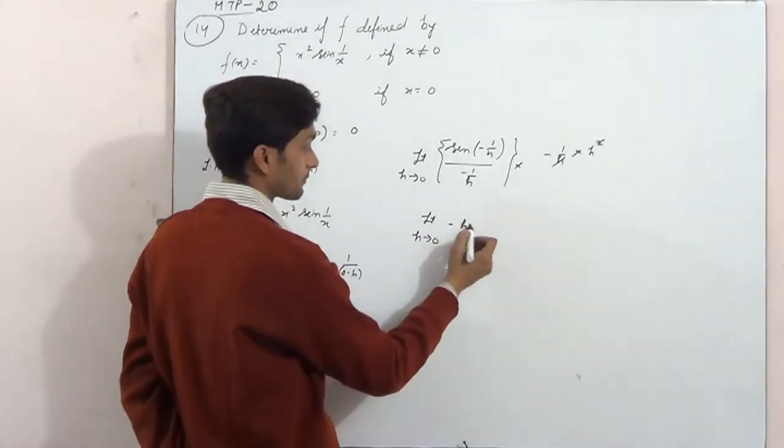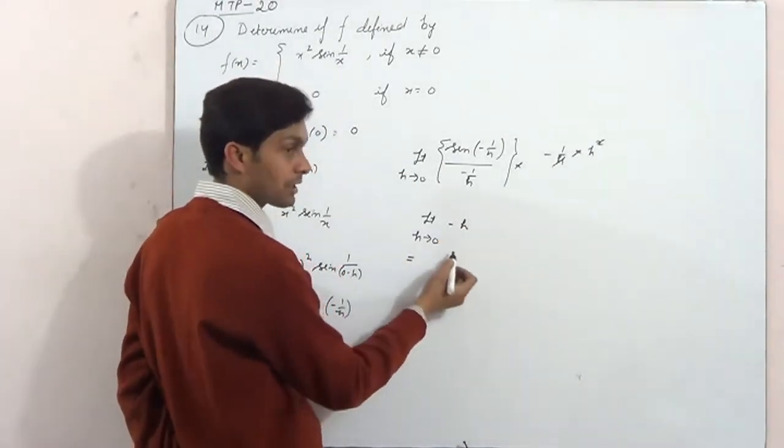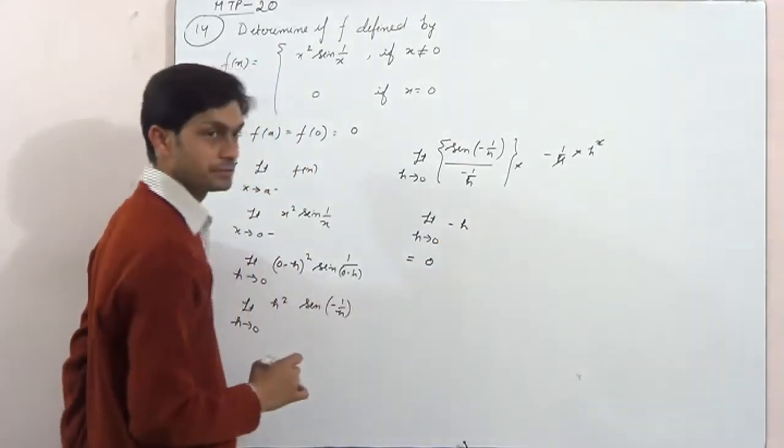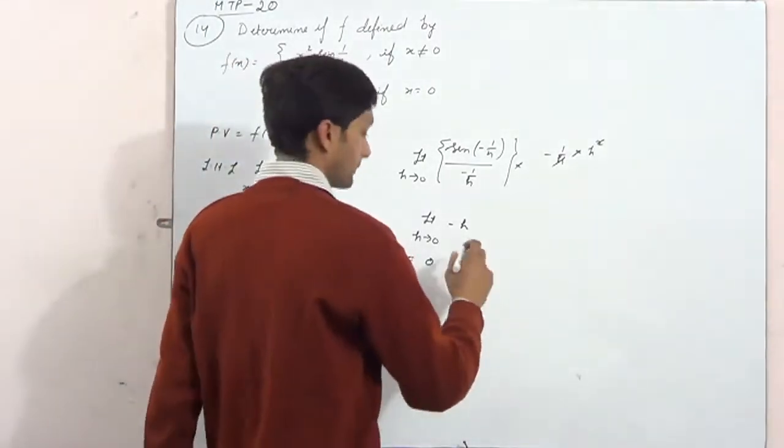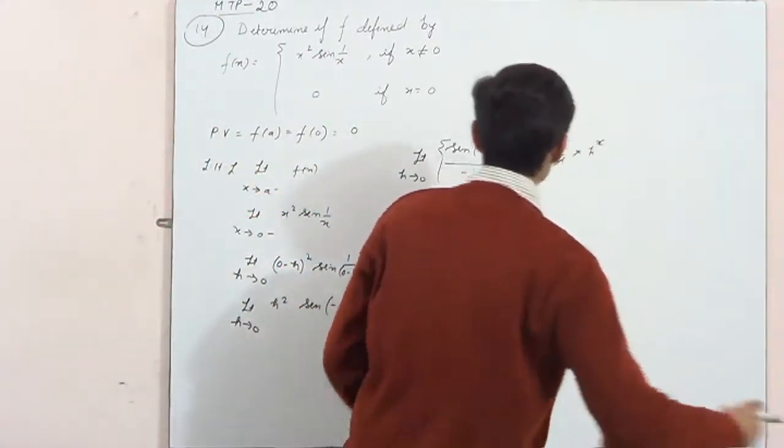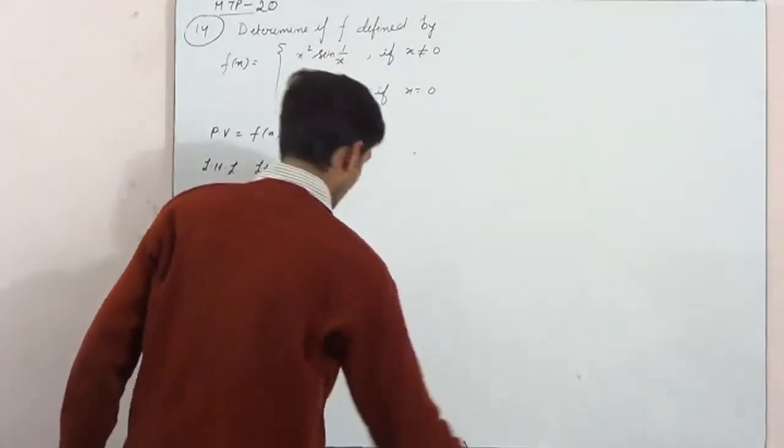What will happen? h will come. Now 0 will put, now 0 will come.